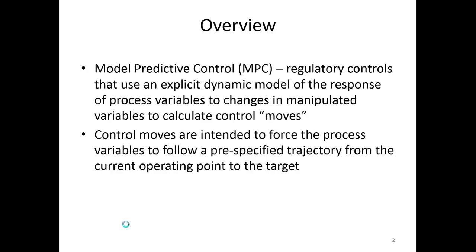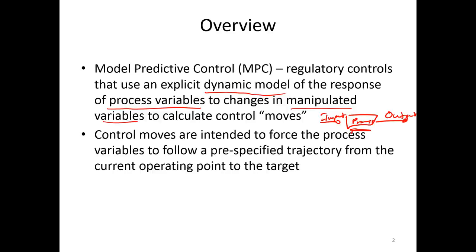When we talk about model predictive control, we're talking about using an explicit dynamic model. There's a dynamic model of the response of the process variables — the outputs — to changes in the manipulated variables. So we have some inputs, a process, and outputs. We have some sort of a process model, whether that be differential equations or an empirical model — some dynamic model that relates the inputs to the outputs. What we're doing is trying to compute control moves intended to force this output along a particular trajectory.